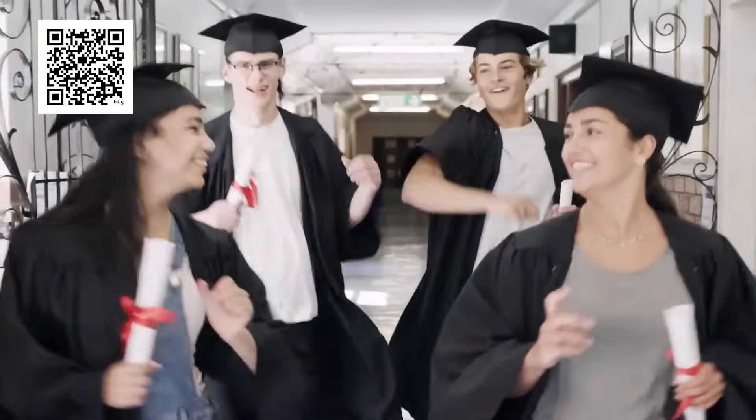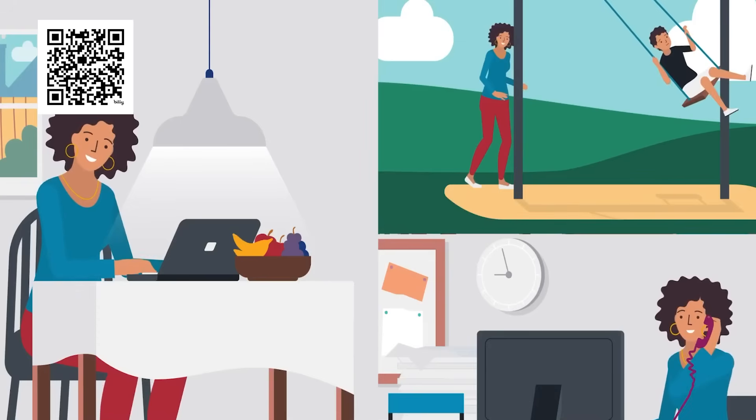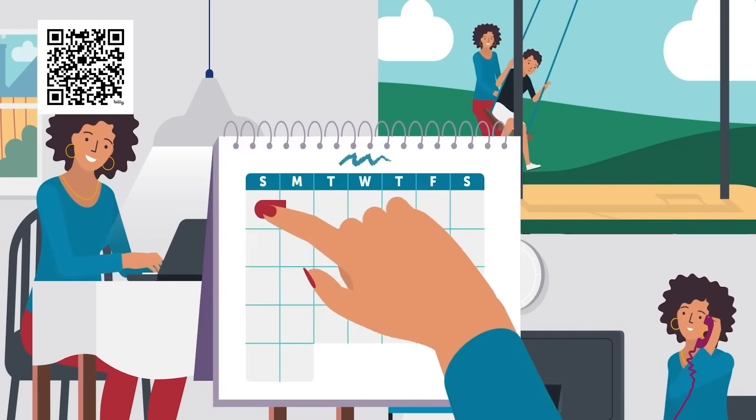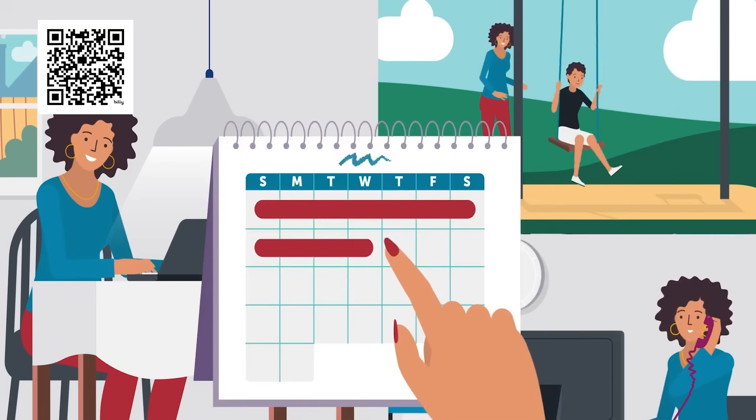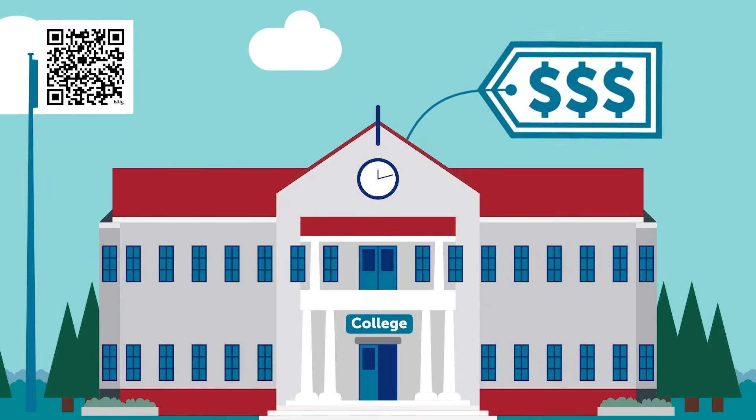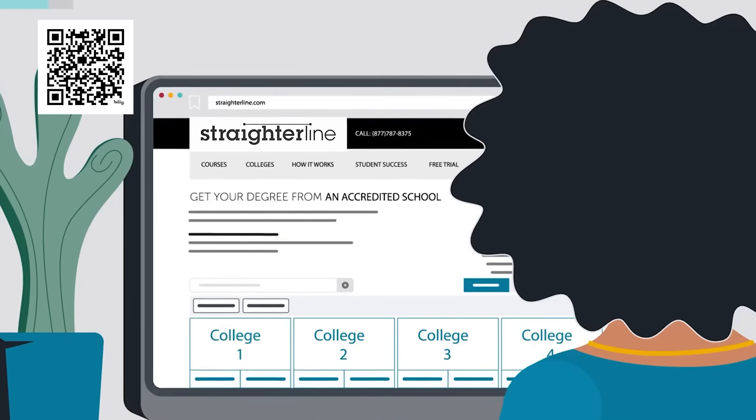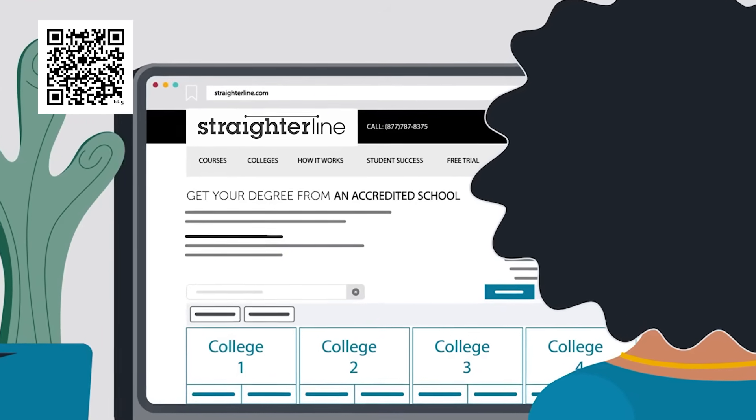Straighter Line provides online courses that are adaptable, cost-effective, and readily transferable to over 3,000 colleges and universities across the U.S. As a leading provider of online college credit courses, they assist students in accelerating their journey towards a bachelor's degree in a faster and more affordable way. It's all about taking a smarter line to your future, tailored to your pace and schedule.